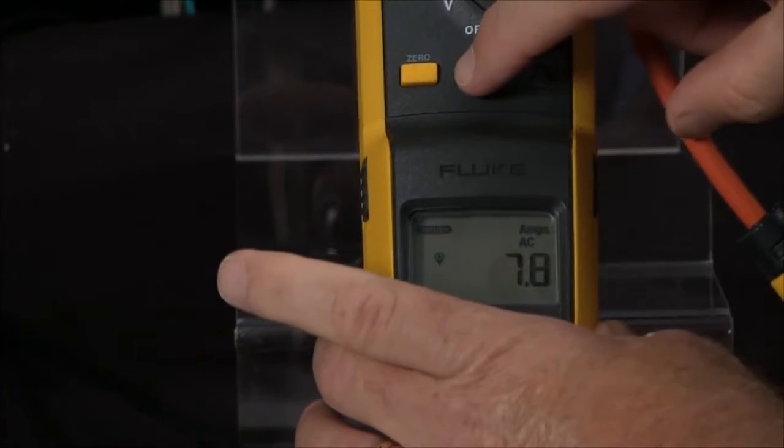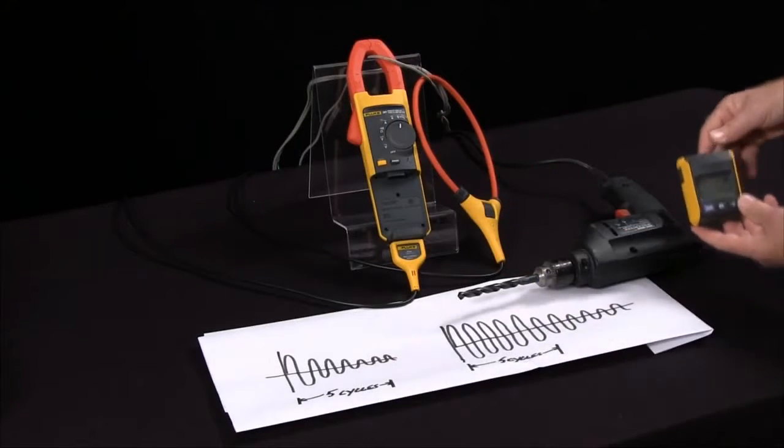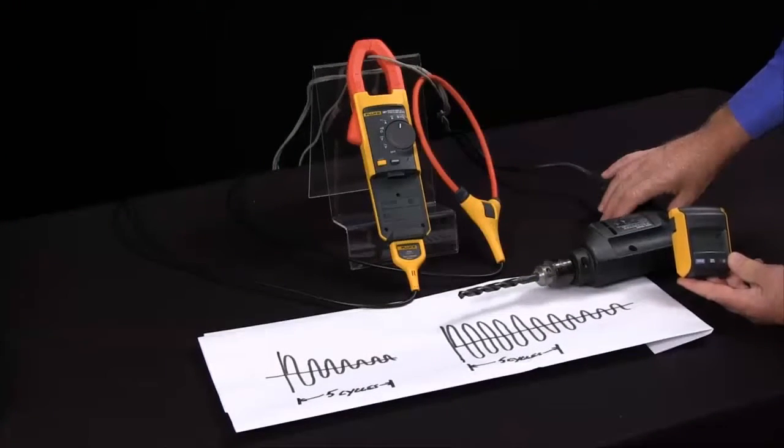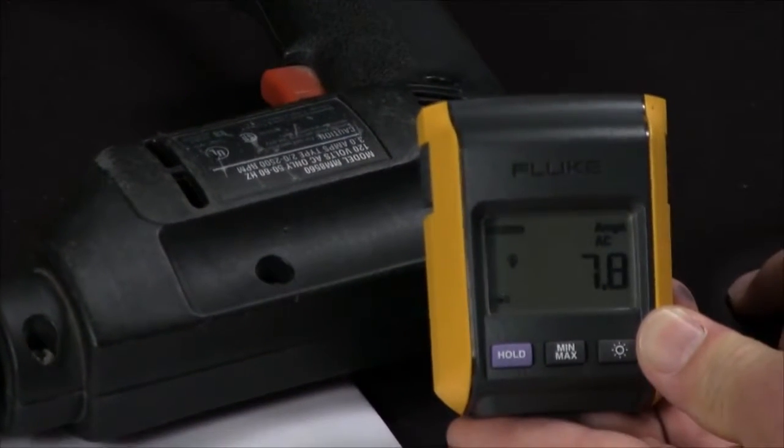Another great feature of the Fluke 381 is you can set the meter to inrush, pull the display over to where the motor start cabinet is, start the motor, and get the inrush current remotely.